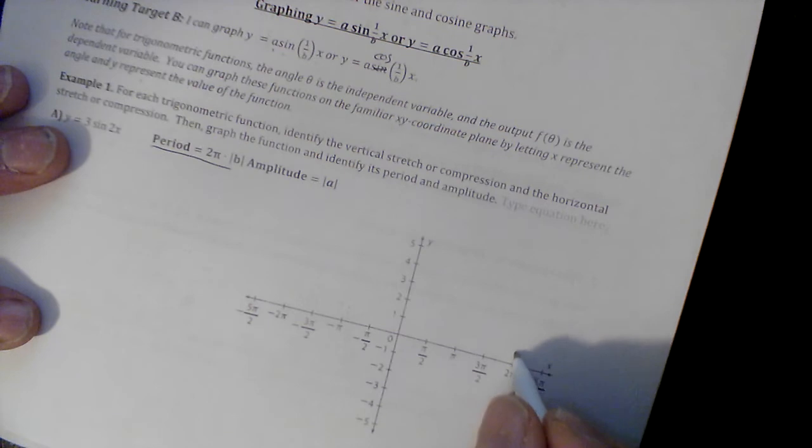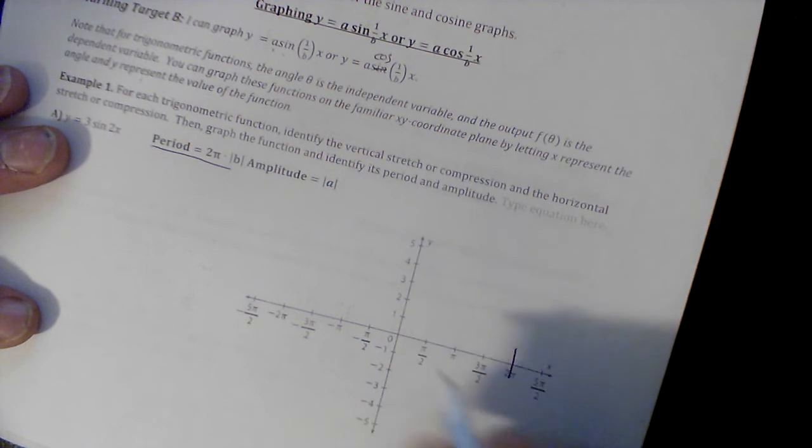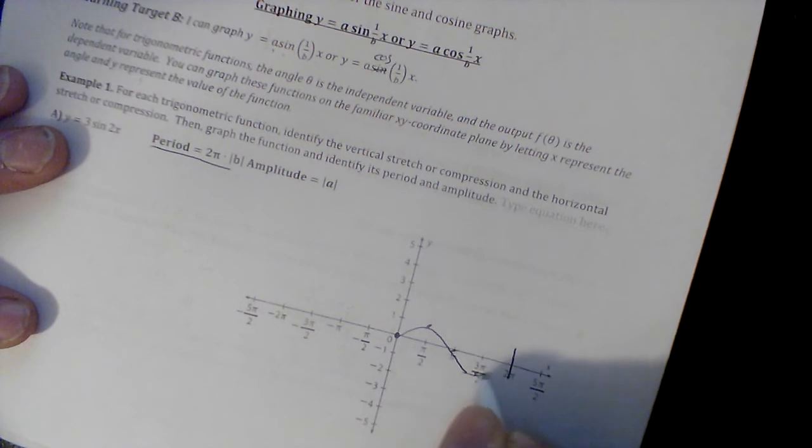I'm going to show you the standard sine graph. The standard sine graph usually has a period of 2π, so it usually goes to here. It starts at zero, starts in the middle, goes up, comes down. You can refer back to what we just did to figure this out, but this is the standard sine graph.